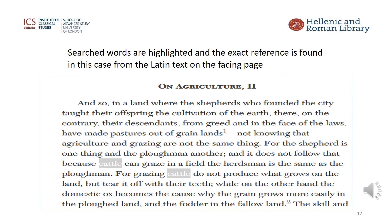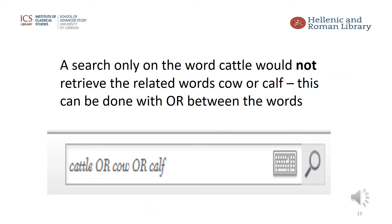Clicking on the title of the work for each result takes you to the full page of the text. Note that to quote the exact line reference, you will need to find the line numbers from the left hand page. It is worth pointing out that a search on 'cattle' will not find related words such as 'cow' and 'calf'. But it is possible to use the logical operator OR to expand a search. By using the word OR in capital letters, you can search for the presence of either cattle, cow, or calf. By doing this, five more results are found.